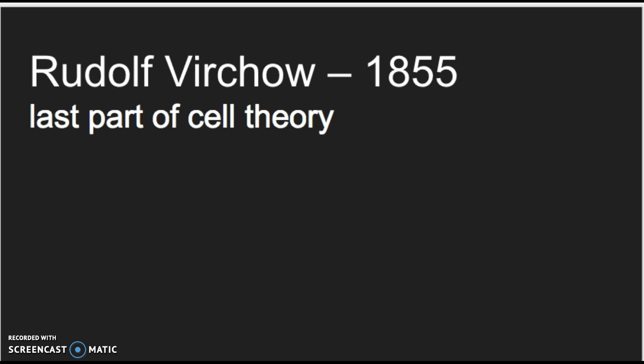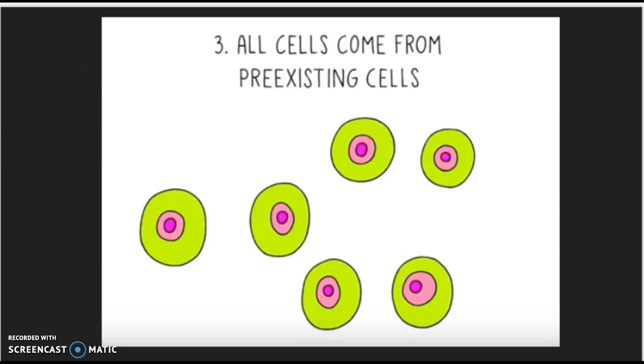The person that wrapped up the cell theory was Rudolf Virchow. In 1855, he wrote the last part of the cell theory, which was that all cells come from pre-existing cells.